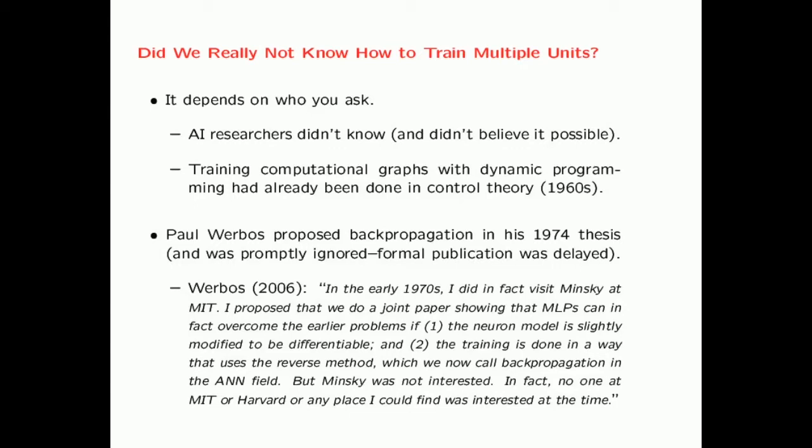In 1974, Paul Werbos, in his PhD thesis, proposed how to do backpropagation in the context of neural networks. However, the bias against neural networks had been so firmly entrenched at the time that he was promptly ignored, and he did not formally publish his paper until 1982. Werbos did try to convince prominent researchers, including Minsky, that backpropagation was a way to train multilayer neural networks. But at that time, it was considered heresy to even believe this was possible. Nobody was even willing to risk their academic reputation to publish a paper on backpropagation.